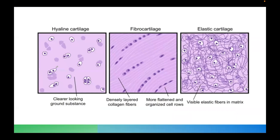I want everyone to remember the description of the cytoplasm as well as the cells, and particularly the matrix. The hyaline cartilage has the clear-looking ground substance. The substance responsible for this ground glass or clear-looking ground substance appearance is because of the presence of glycosaminoglycans, such as hyaluronic acid.